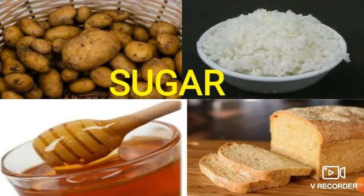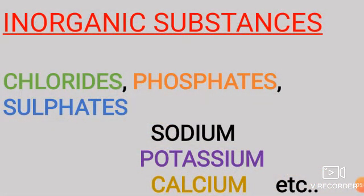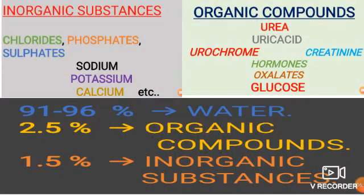Inorganic substances constitute about 1.5 percent of urine. These include mostly chlorides, phosphates, and sulfates of sodium, potassium, and calcium. In addition, traces of iodine and magnesium can also be found.